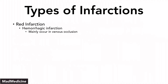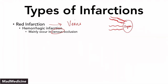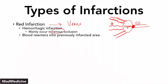Red infarctions are hemorrhagic infarctions that mainly occur with venous occlusion — these occur in the veins. To draw a simple schematic: let's say this is some organ, and this organ has some blood supplies coming to it — these are the arteries. And then you have the venous system leaving. In red infarctions, you are blocking the vein or some part of the venous system, and that is causing the red infarction. Even though you're blocking the vein, you're still going to have blood that continuously enters into the infarct area.